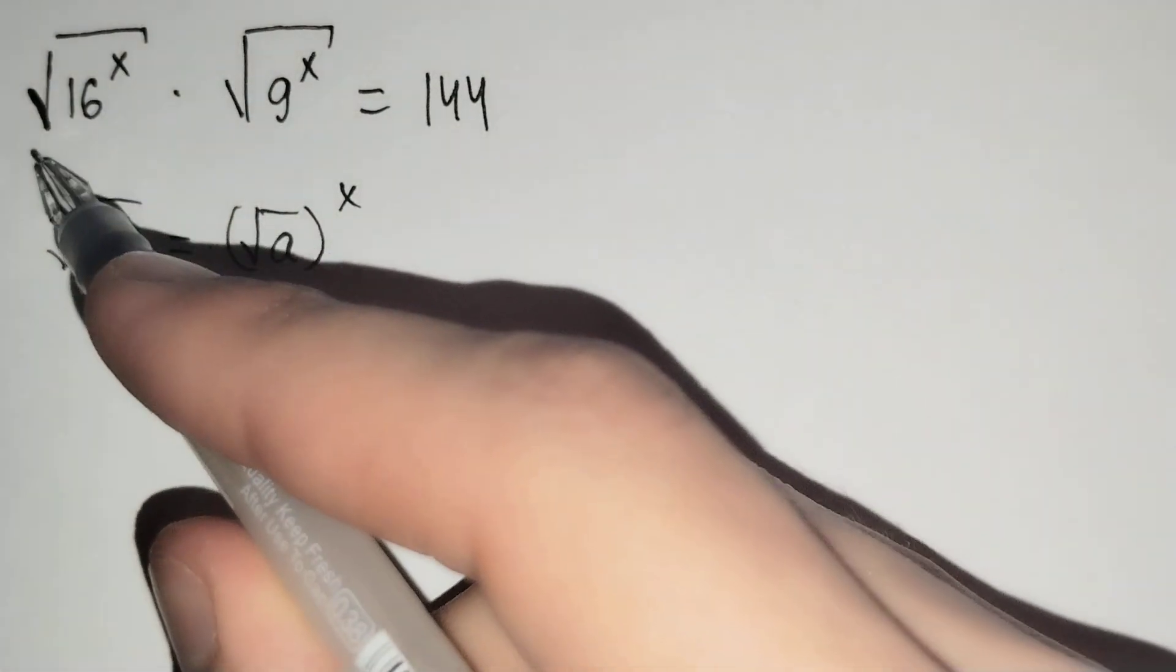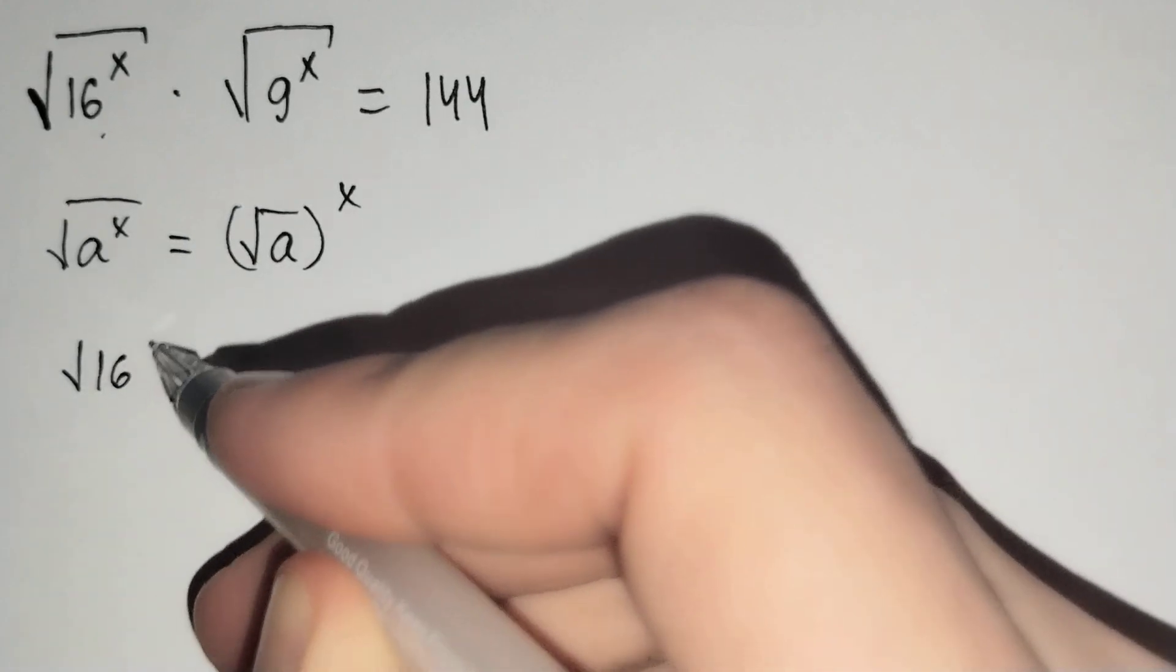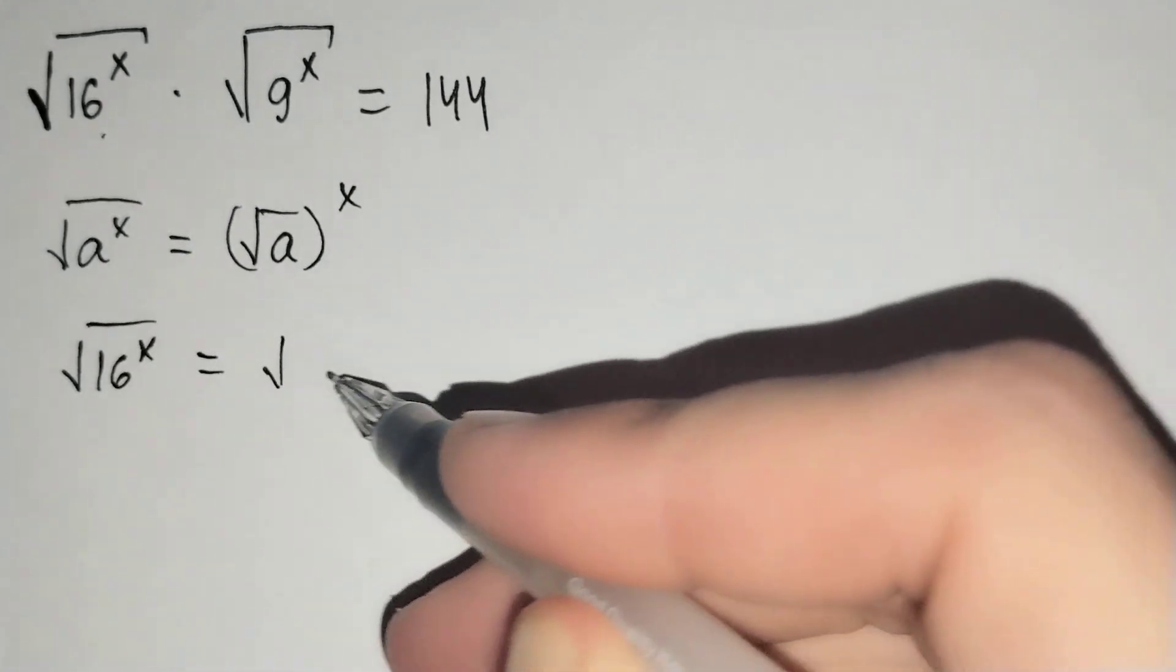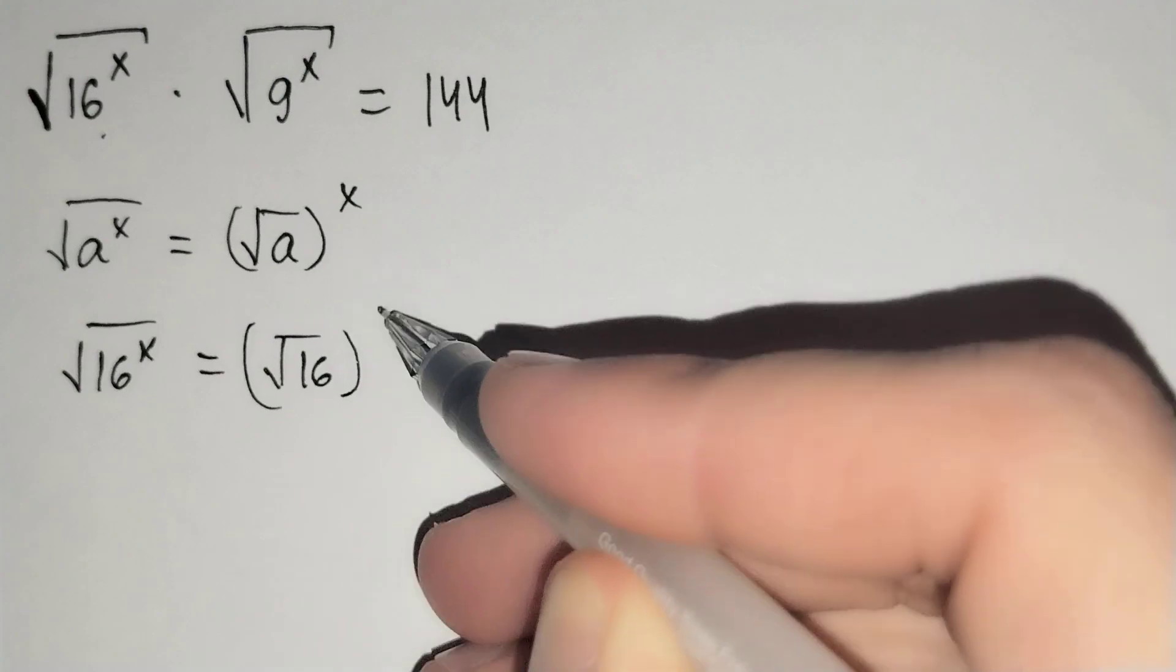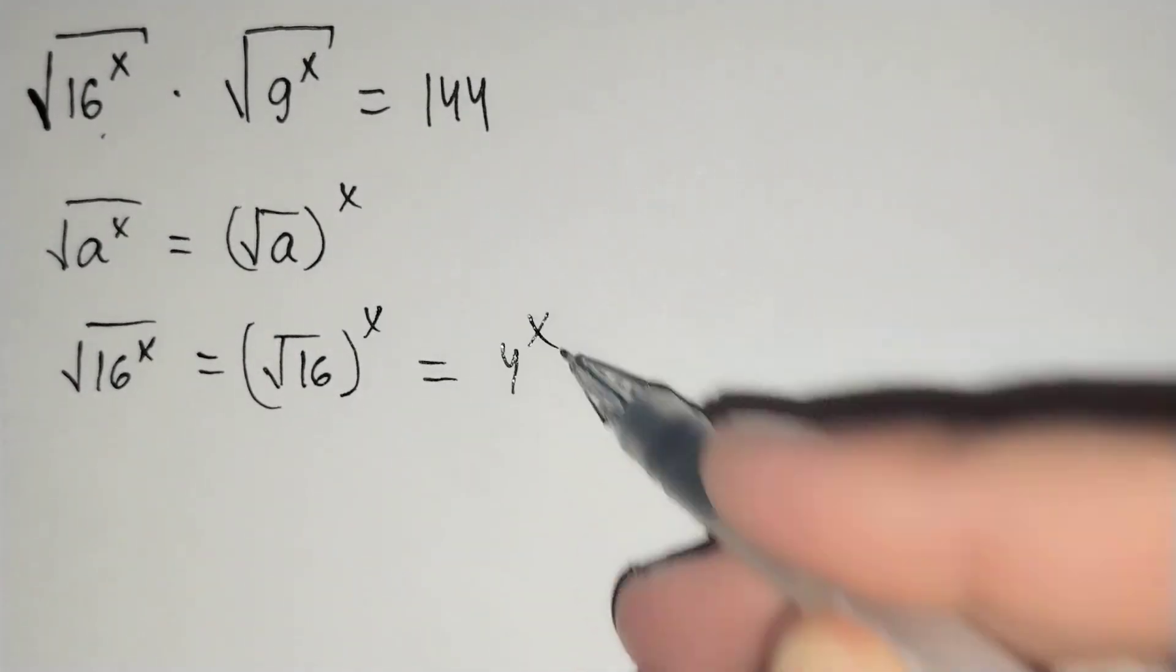For this formula, the square root of 16 power x equals to the square root of 16 brackets power x, and it does 4 power x.